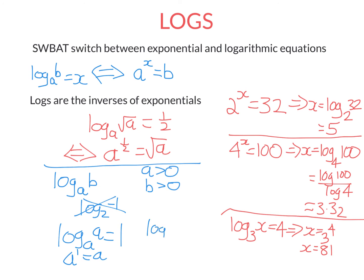If you have log base a of 1, that's always equal to 0, because the exponential form of this equation, a to the power of 0, is always 1. Remember, we're saying a has to be a positive number, so a can't be 0. So just keep these in mind. They will come in handy later on.